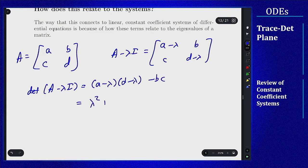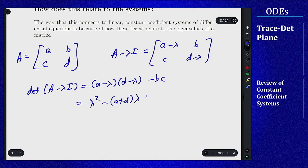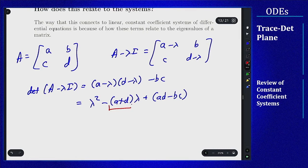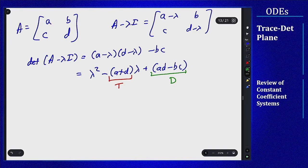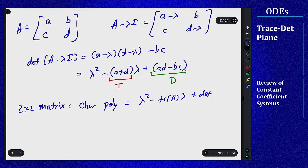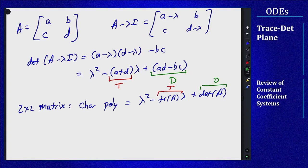Lambda squared plus, let's see, when I do the middle term I'll see a minus A lambda and a minus D lambda. So I'll write this instead as minus (A plus D) lambda, and then plus AD minus BC. Do any of those things look familiar? Hopefully they do. This is exactly the trace and this is exactly the determinant. So what we really have is that for a 2x2 matrix the characteristic polynomial is always of this form: lambda squared minus trace of A times lambda plus determinant of A.